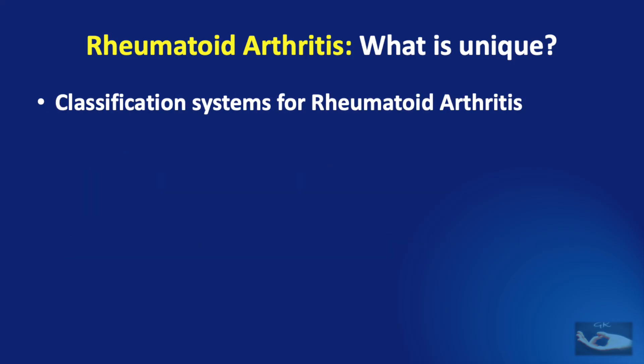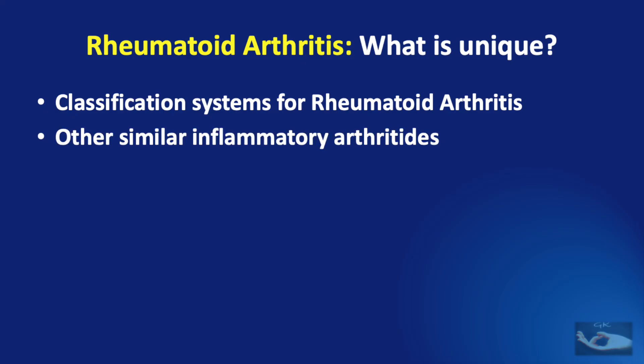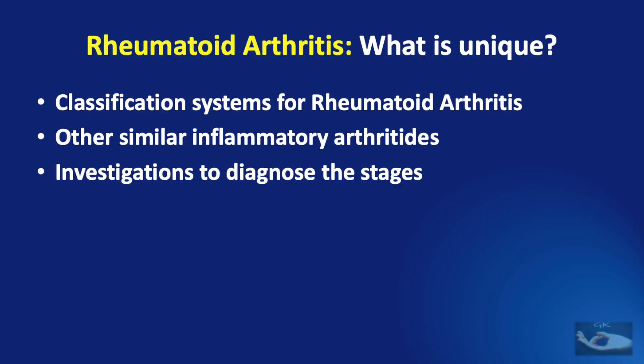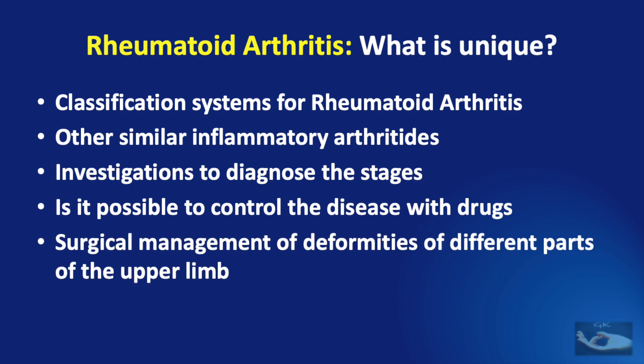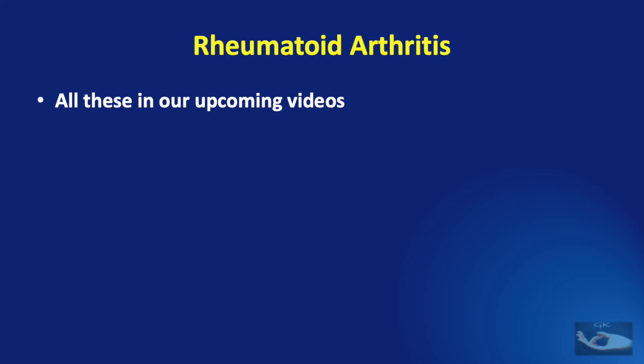We need to understand the classification systems for rheumatoid arthritis and learn to differentiate it from other similar inflammatory arthritis conditions. Relevant investigations to diagnose the stages of the disease will also have to be performed. After understanding the etiology, pathogenesis, and clinical features, we need to first control the disease with drugs, as uncontrolled rheumatoid arthritis can lead to severe morbidity and even premature mortality. When various deformities present, we also need to understand the surgical management and the principles involved — all of which we shall cover in upcoming videos.